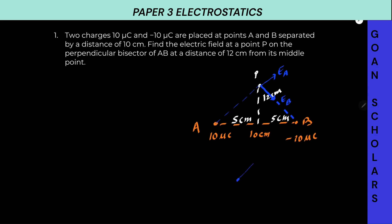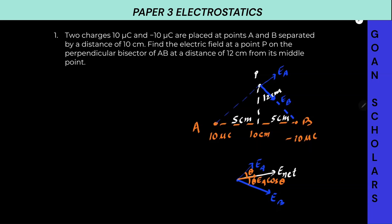Now we have two vectors: one is EA in this direction and we have EB in this direction. Where will the resultant be? From standard vector addition, if we have two vectors like this, the resultant will be along this line — this will be our net electric field. We can figure this out using components: the component of EA will be EA cosθ, and EB cosθ, where θ is this angle. The component of EA perpendicular will be EA sinθ and here it will be EB sinθ.